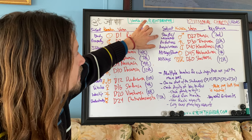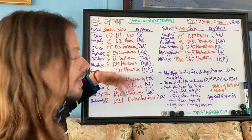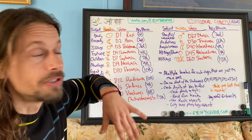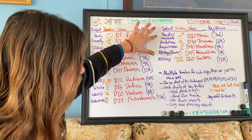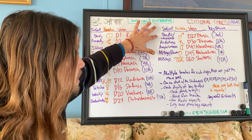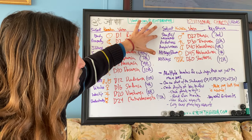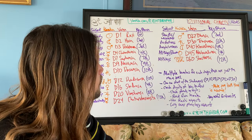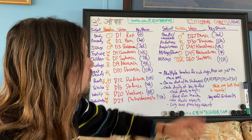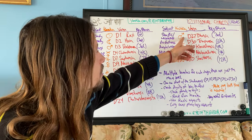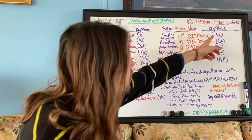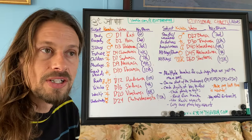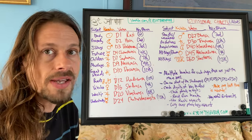The D27 is the chart of your strengths and weaknesses. You look at Mars as the Karaka and the third bhava, which is naturally the bhava of your strengths.